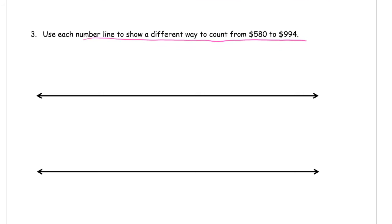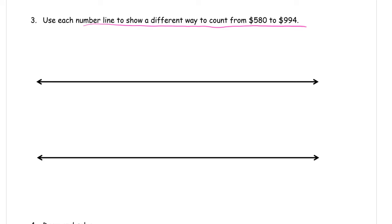Use each number line to show a different way to count from 580 to 994. So like I just mentioned in the last one, there's different ways to do it. I'm going to start with the easiest way first. Now we're using number lines. 580. All right, to 994. Well, we're already at a ten here. 80 is a ten.